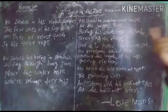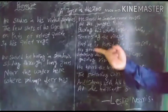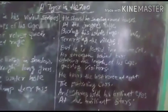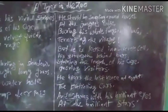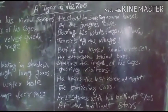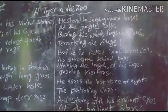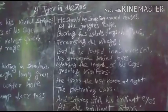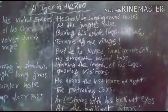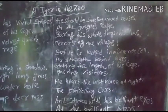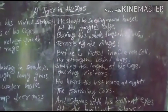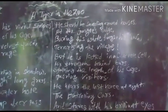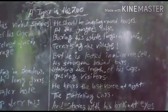Now look at the second stanza of this poem. The second stanza is like this: 'He should be lurking in shadow, sliding through long grass, near the water hole, where plump deer pass.'